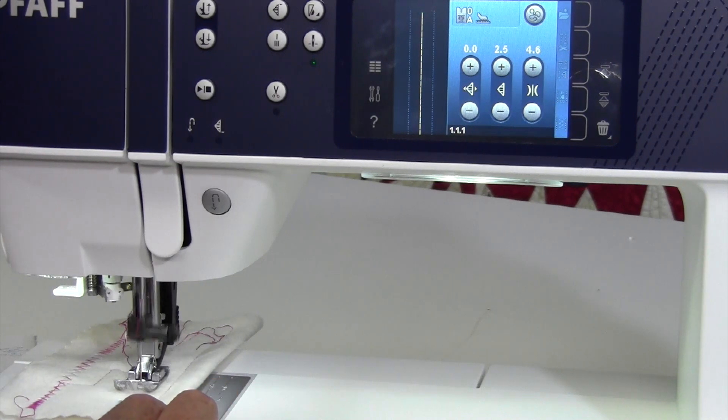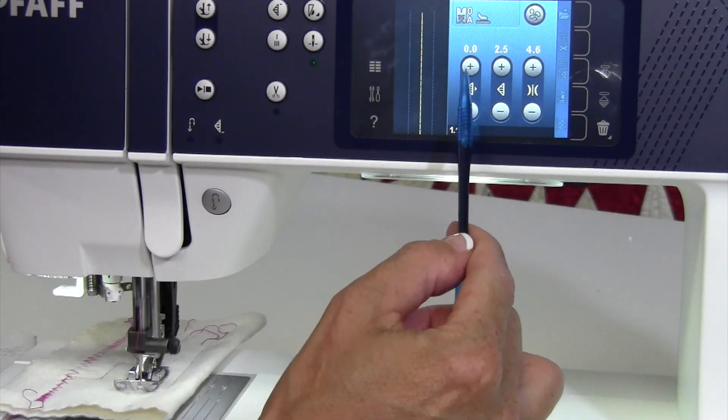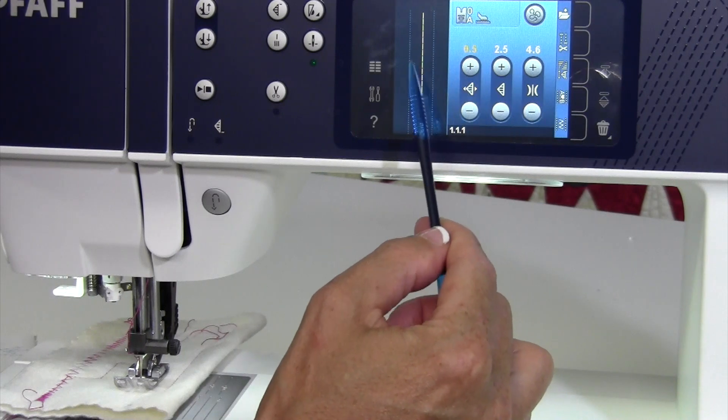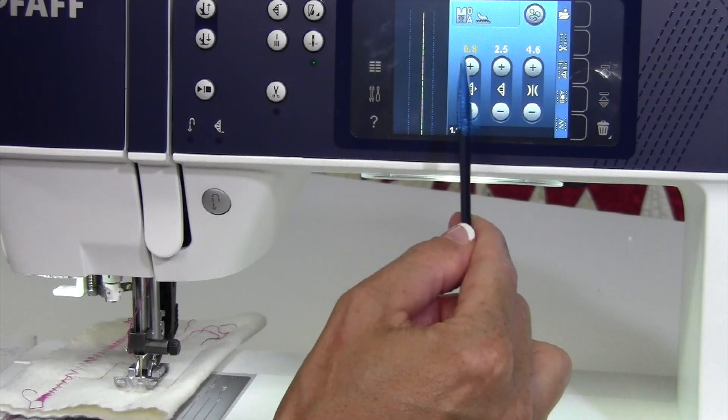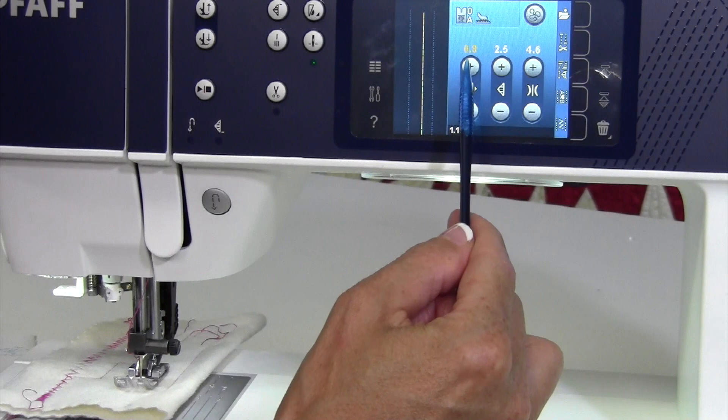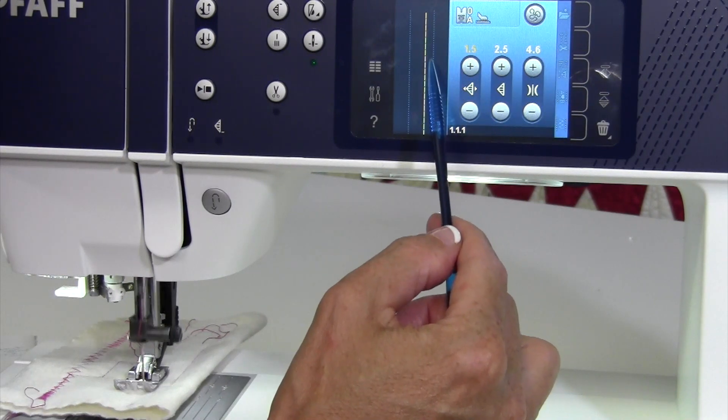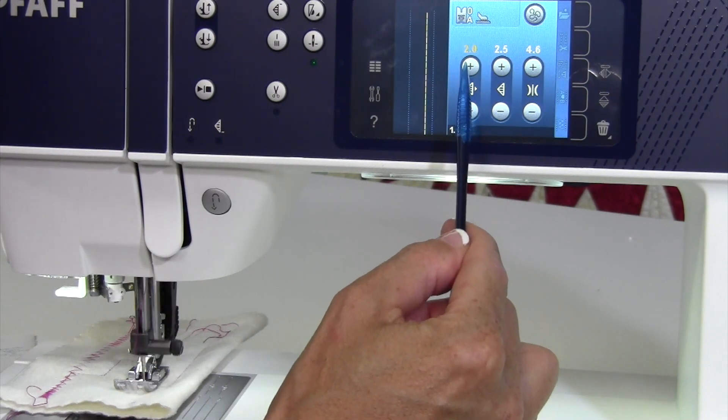When you're sewing, one thing that I do like is we're on this straight stitch where we can move the needle to the right. Remember, we have 9 millimeters across. This will actually go all the way to 4.5, and I can change this while I'm sewing.